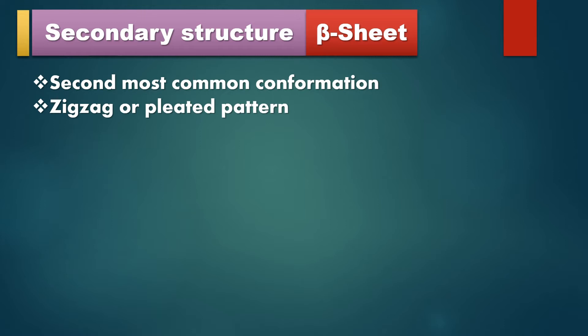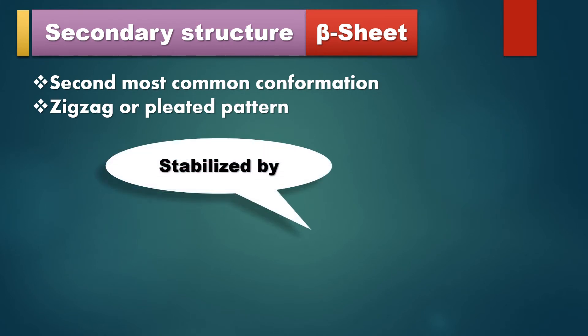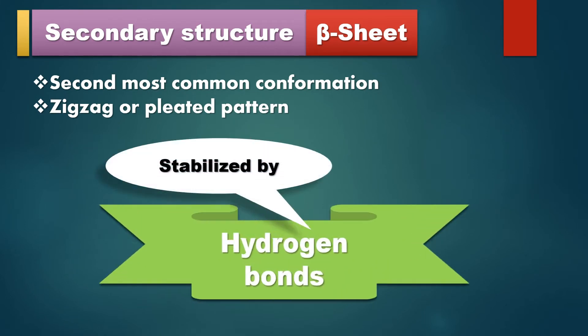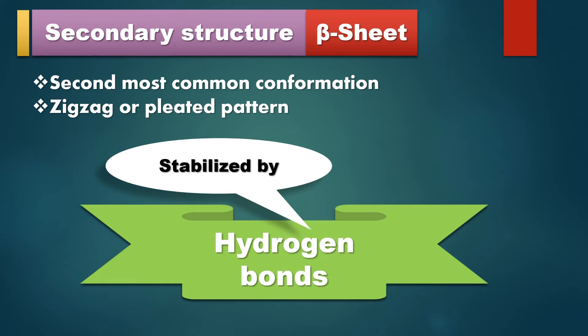The beta pleated sheet is an extended conformation and it is in a zigzag manner, which is why they gave it the name pleated sheet or beta pleated sheet. As with alpha helix, the main bond responsible for beta sheet is also hydrogen bonds — a non-covalent bond — but collectively they make a stronger bond.